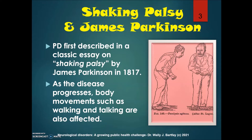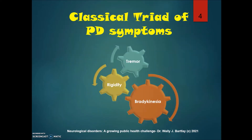Here you can see a photo from that particular essay that he wrote. As the disease progresses, body movements such as walking and talking are also affected over time. Here are the classical triad of Parkinson's disease symptoms that we see clinically: tremor, rigidity, and bradykinesia. These are like rusty gears — the muscles become more and more difficult to move over time.